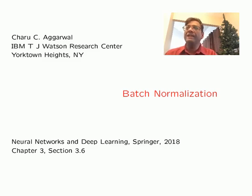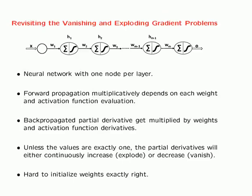In this video, we will discuss the basics of batch normalization. To motivate batch normalization, we revisit the vanishing and exploding gradient problems discussed in an earlier lecture. Here we repeat the example of a neural network with one node per layer.